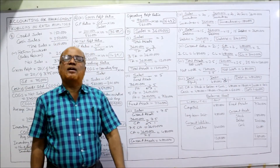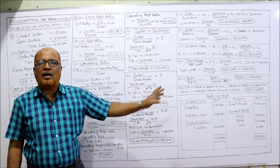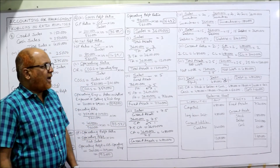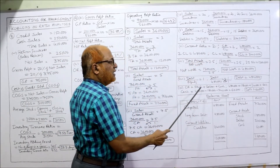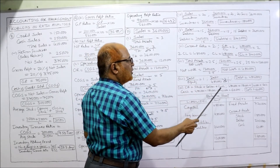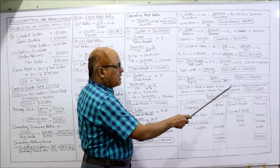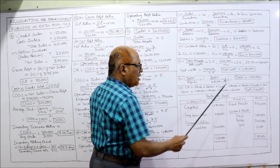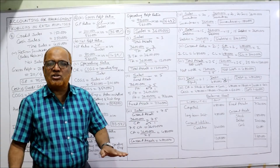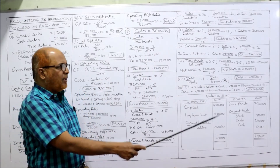Current assets normally consist of stock, debtors, and cash. Total current assets are 4,80,000. Stock (inventory) is 1,80,000, debtors are 2,40,000, and cash we need to calculate. So cash = 4,80,000 minus 1,80,000 minus 2,40,000 = 60,000. All values required for the balance sheet have now been extracted using the given ratios.